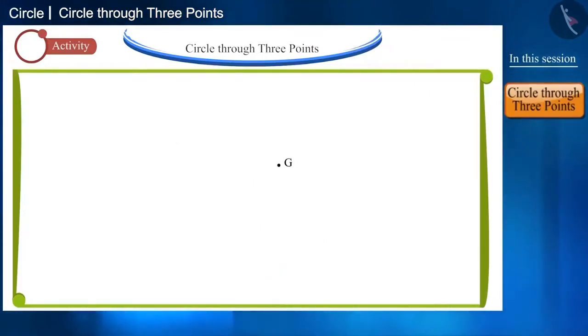Now, if we take the three points G, H, and I in such a way that they are not in the same line, then we call these points non-collinear points.